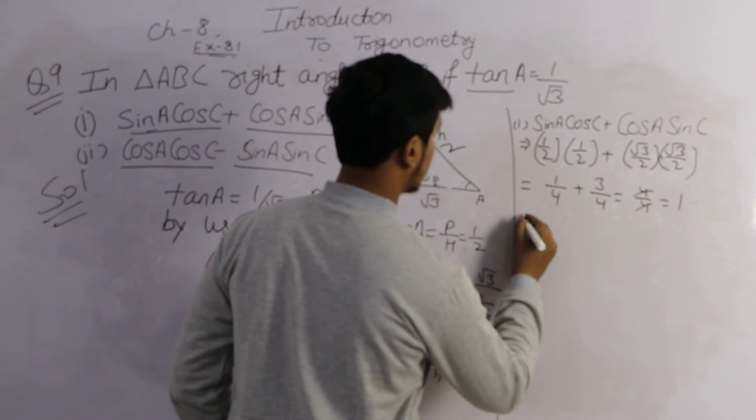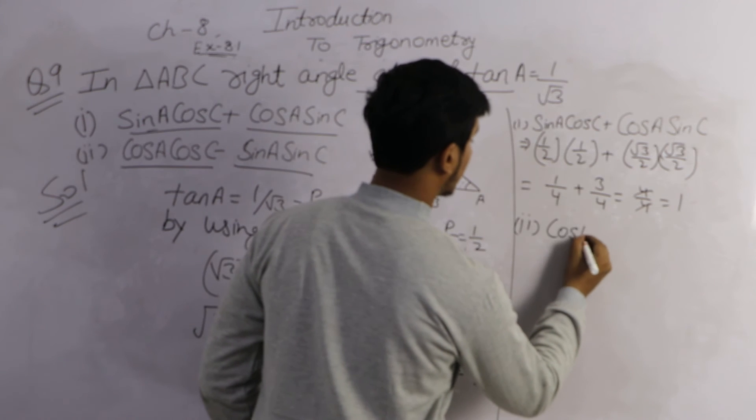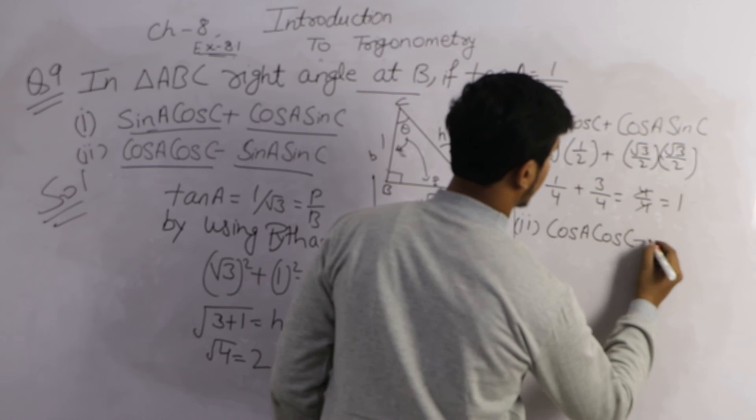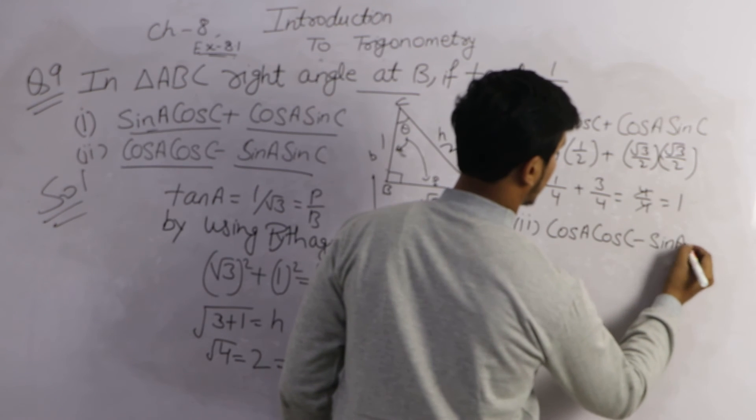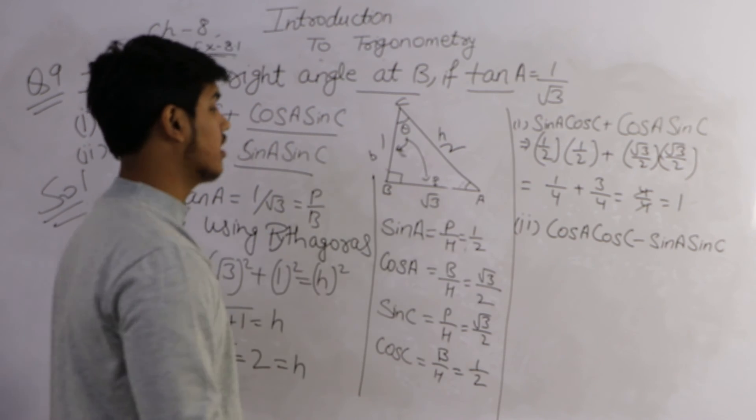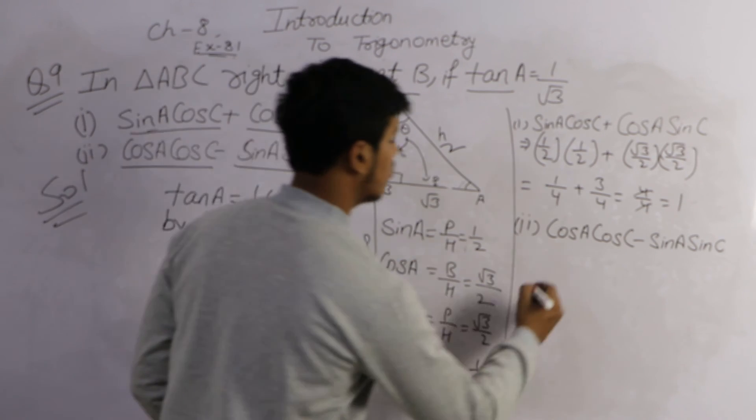The part 2 is cos A cos C minus sin A sin C. Cos A cos C minus sin A sin C.